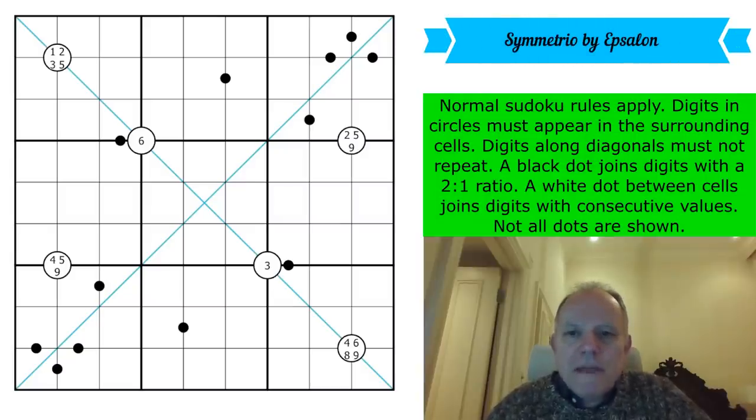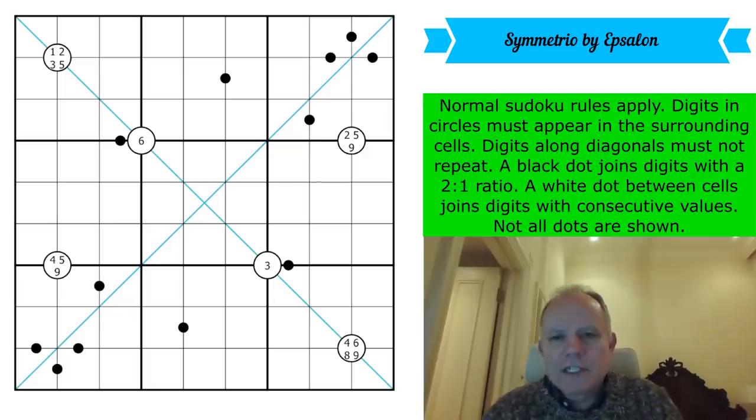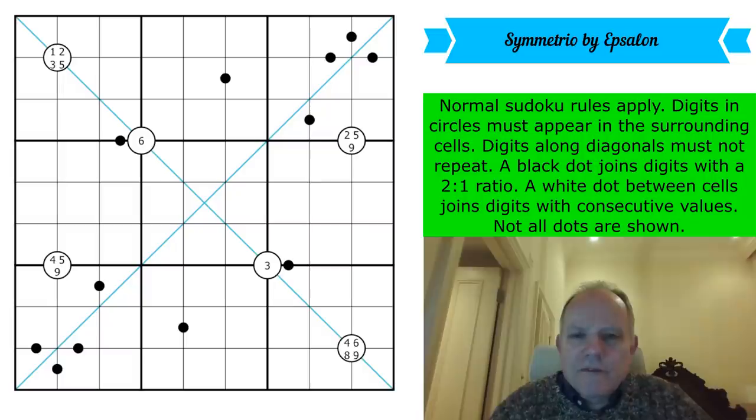It's been sent on to us and it's called Symmetrio by Epsilon. Now I was going to say Symmetrio must be symmetry in a language I don't know like Spanish or Italian or Portuguese, but actually it could be a portmanteau word for symmetry and trio if there's a sort of three aspect to this puzzle. Epsilon, not a name we have met I don't think on the channel before. So a debut, which is great.